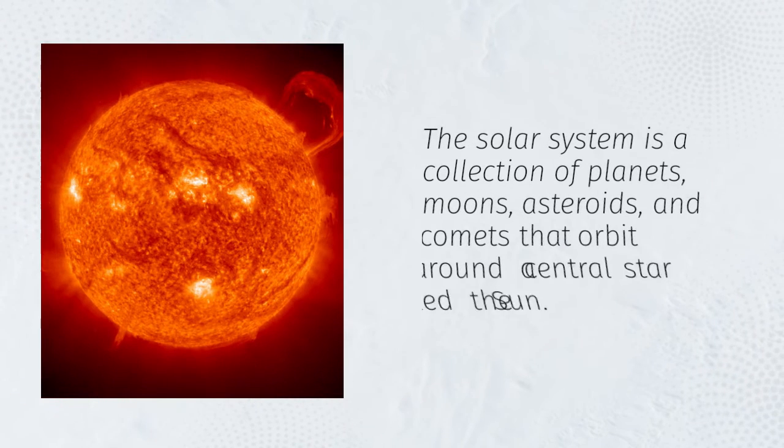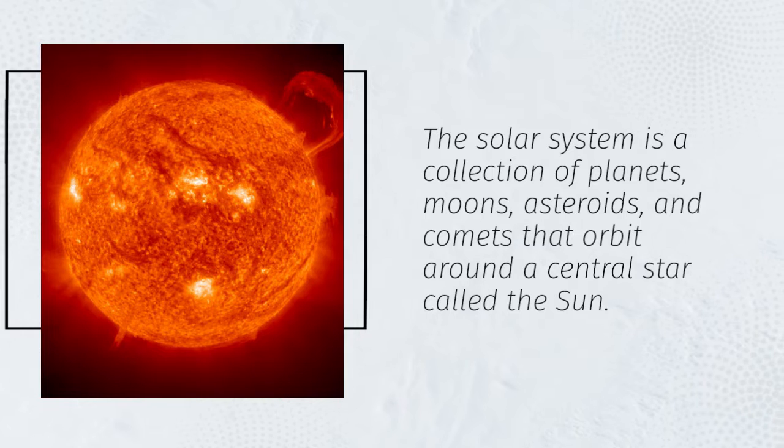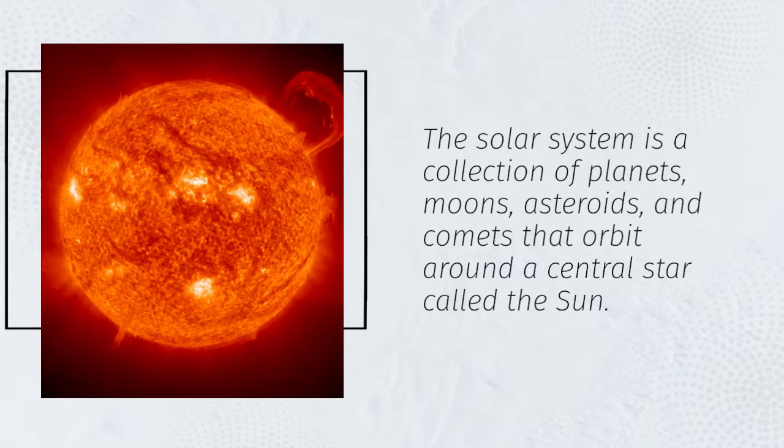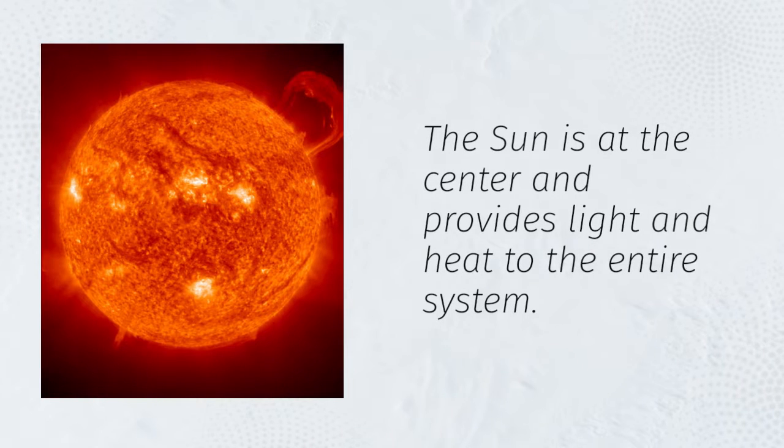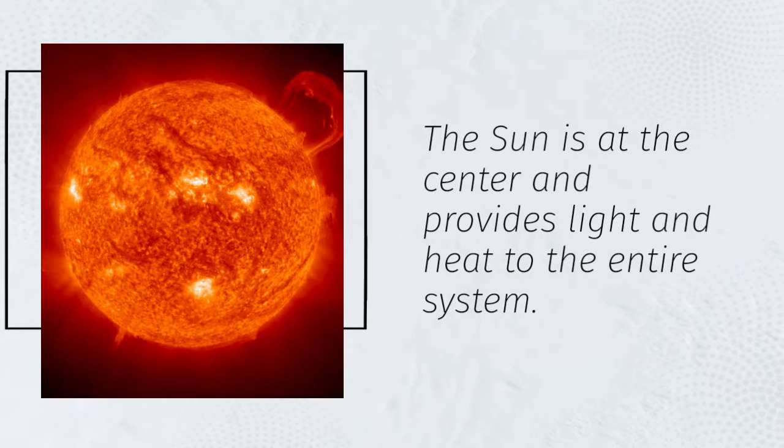What is the solar system? The solar system is a collection of planets, moons, asteroids, and comets that orbit around a central star called the sun. The sun is at the center and provides light and heat to the entire system.